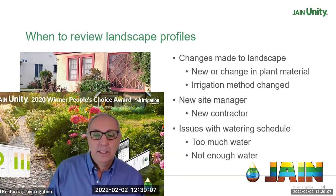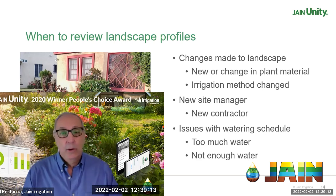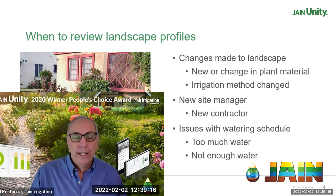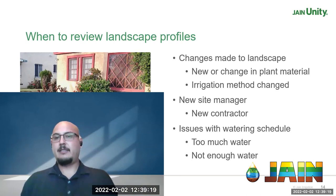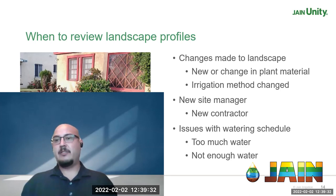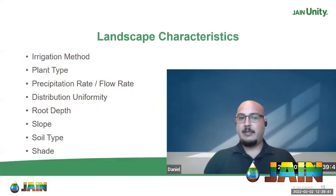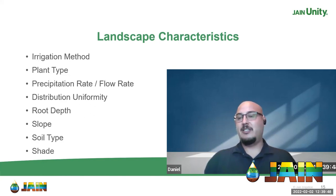Regular visual checks — whether weekly, monthly, or annually — are very helpful to getting this formula correct. And lastly, if you're having issues with your watering schedule — too much water causing puddling or muddy soil, or not enough water stressing your plants — and you've already adjusted the parameter limits in your controller programming, it's time to review your landscape characteristics: irrigation method, plant type, precip rate, flow rate, distribution uniformity, root depth, slope, soil type, and shade.